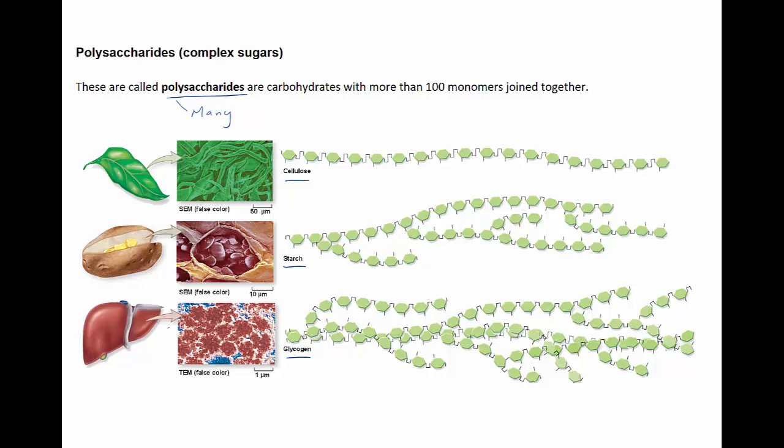Glycogen occurs in animal and fungal cells. In humans, for example, skeletal muscle cells in the liver store energy as glycogen.